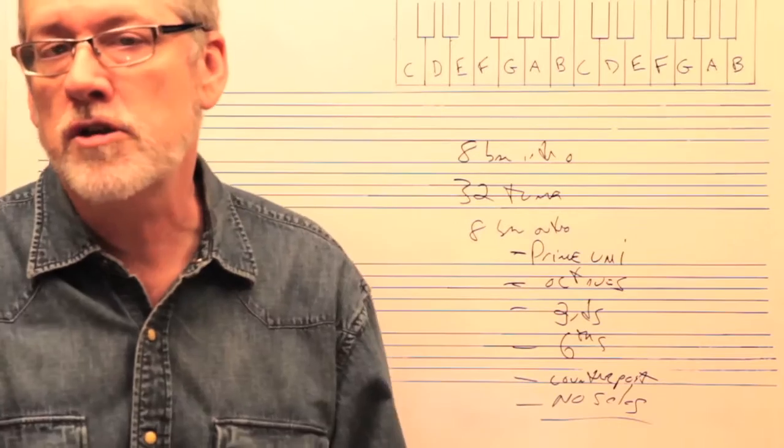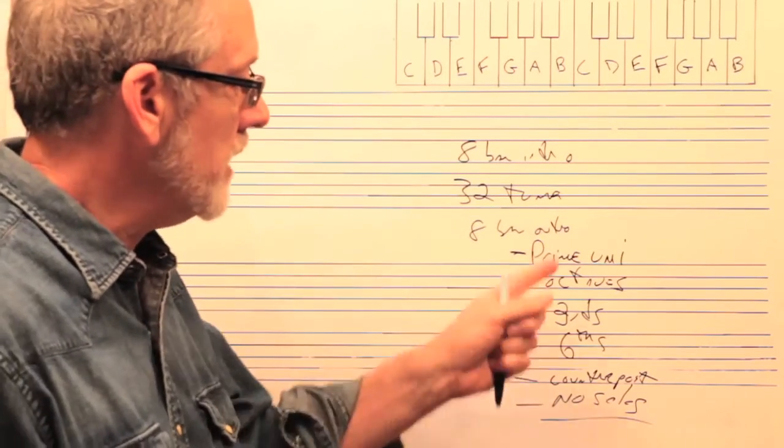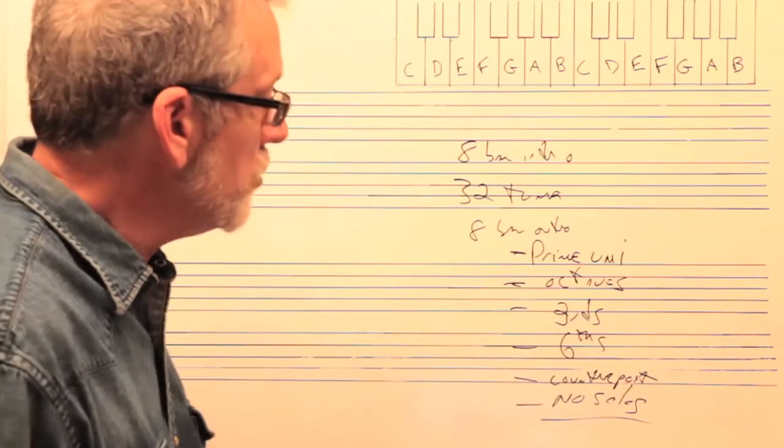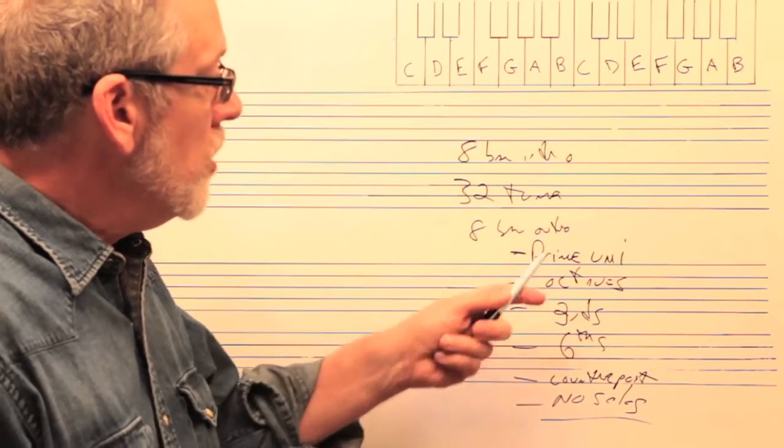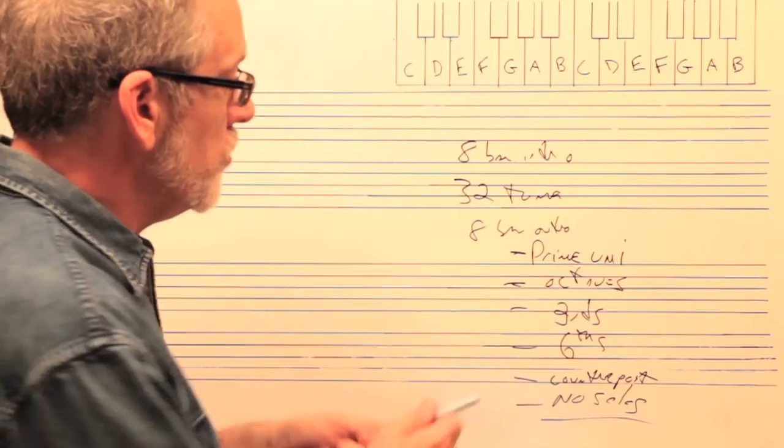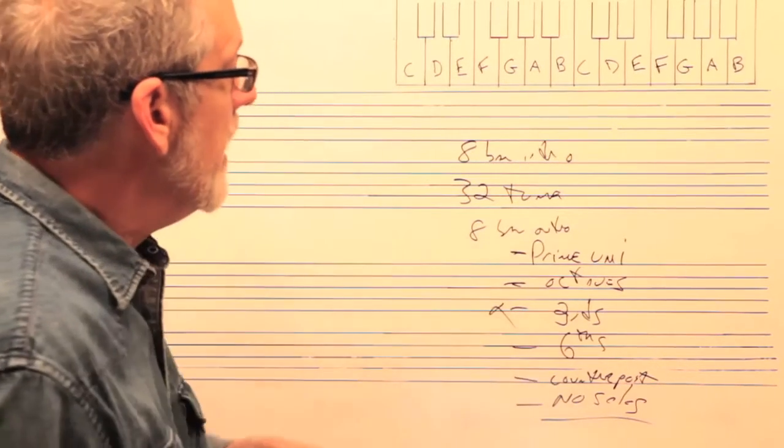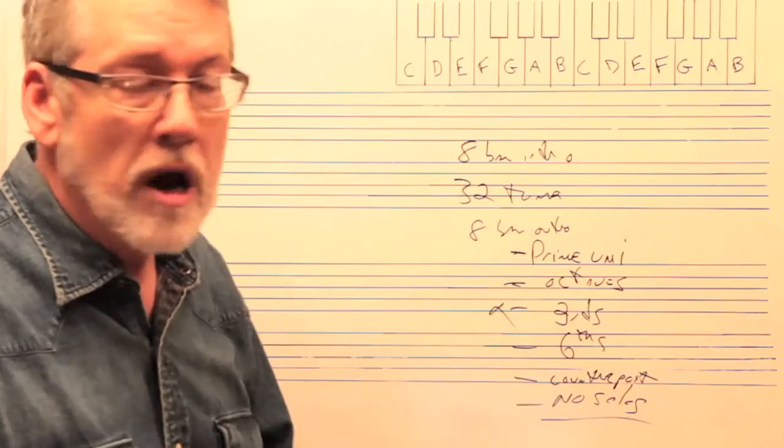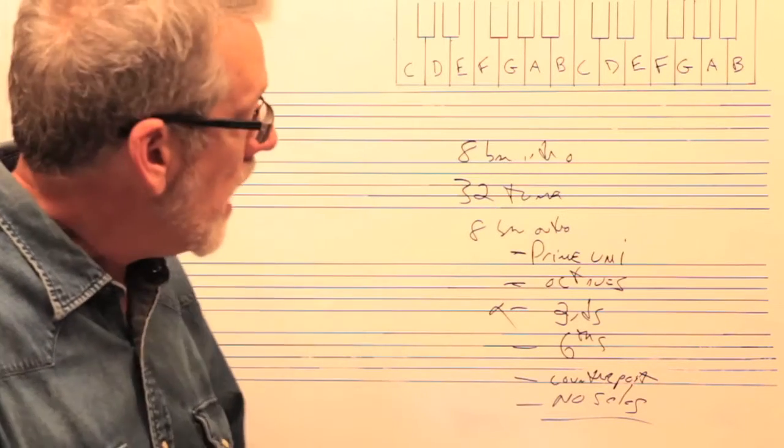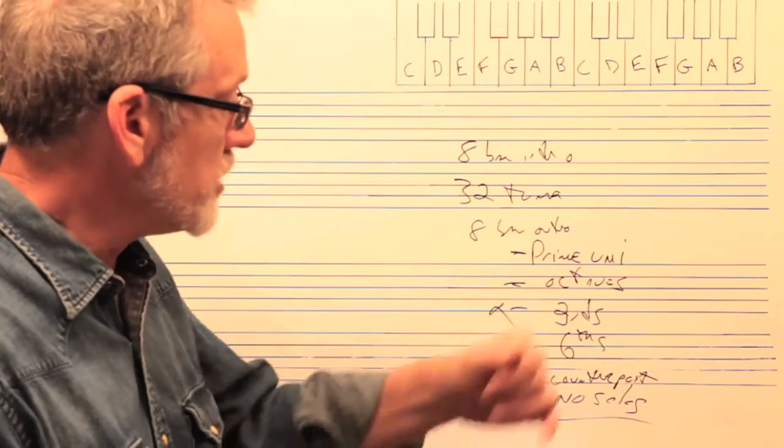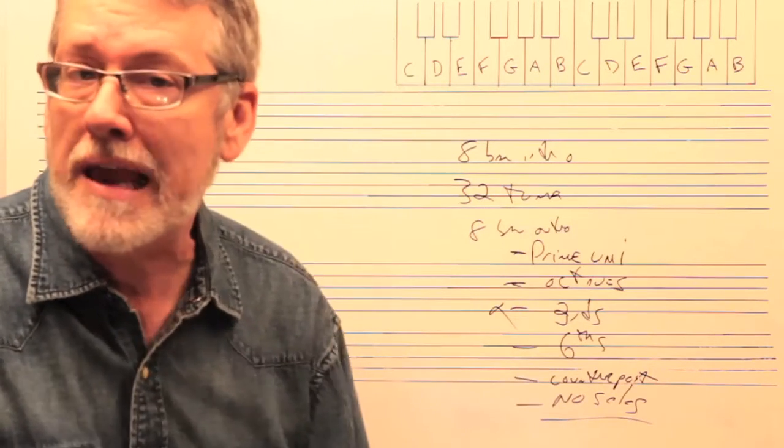Because the point is to try to practice these techniques. You could take each section of the tune and do this. Let's say in the intro you do a thing with thirds. Then when you come to the head of the tune, do it in prime unison, do it in octaves. Maybe when you move to the second ending, write something in sixths or maybe write something in counterpoint.